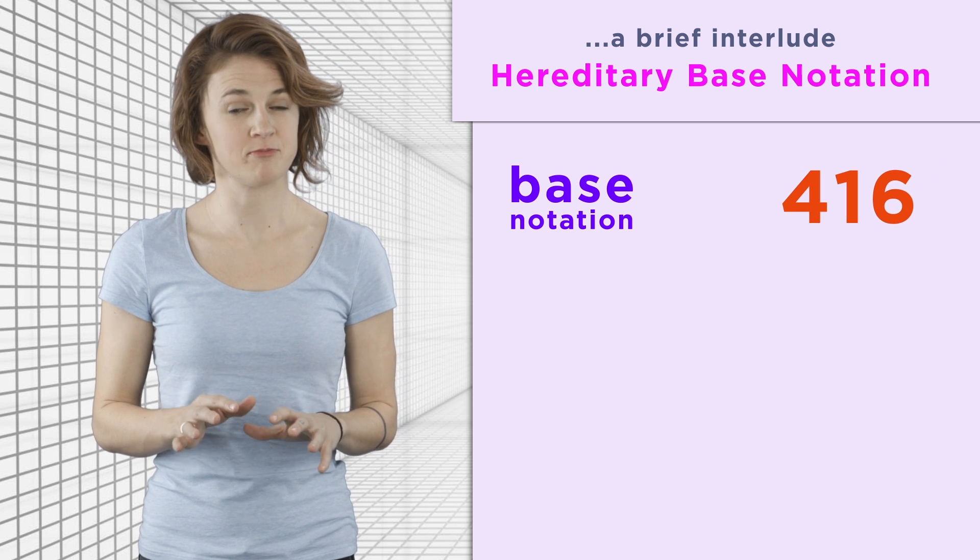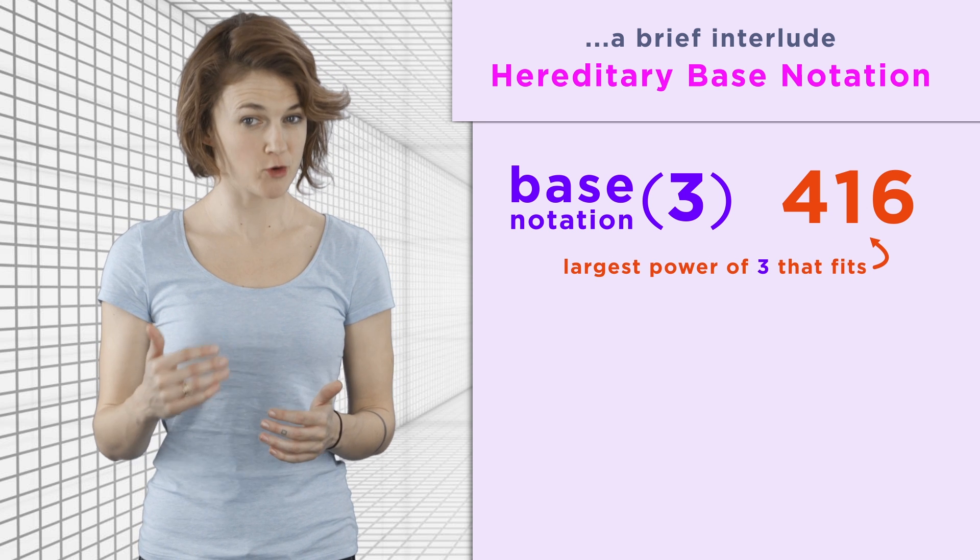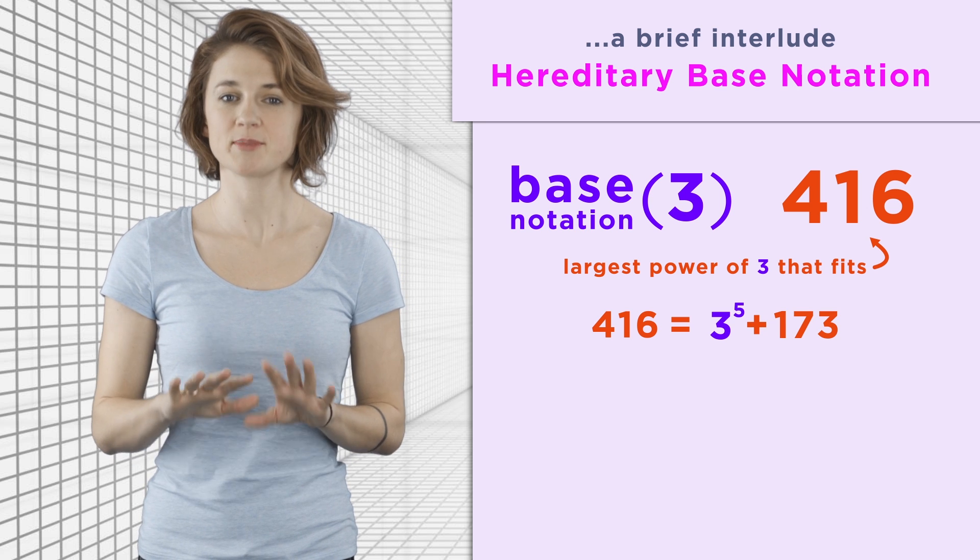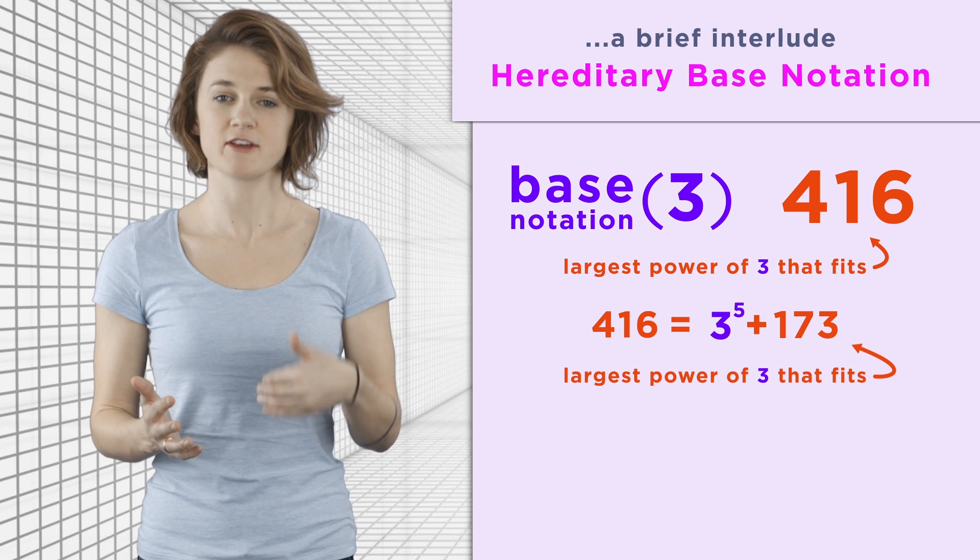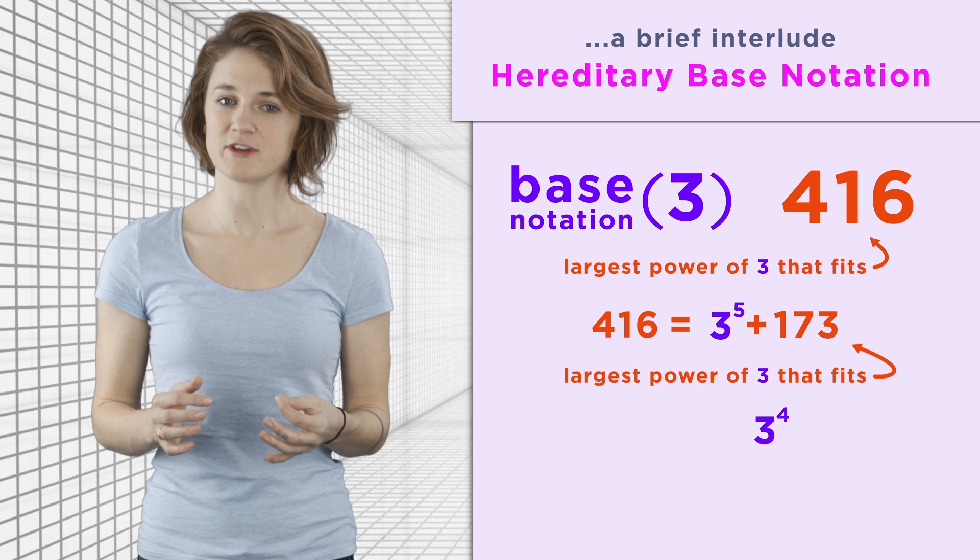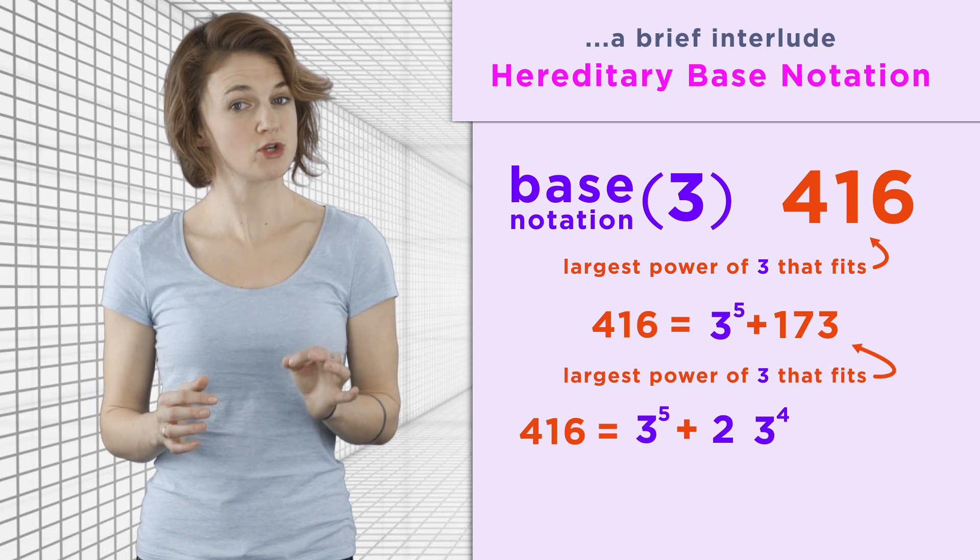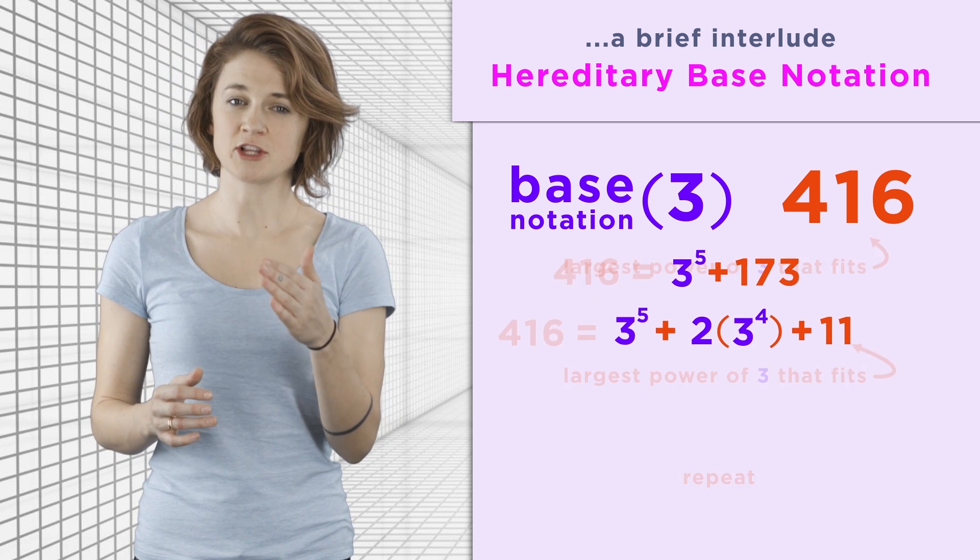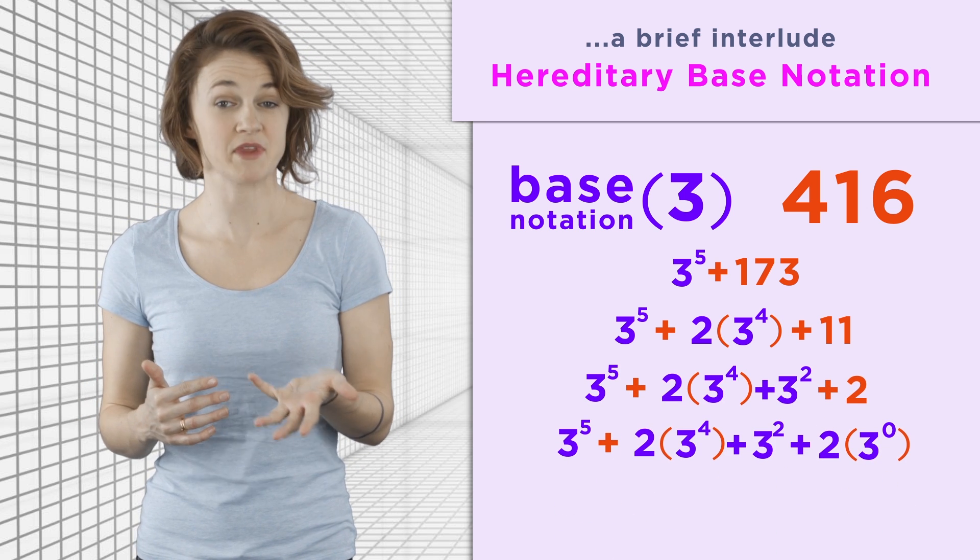To write 416 in base 3 notation, first, pick the largest power of 3 that will fit in 416. So 416 is 3 to the 5th plus 173. Now, what's the largest power of 3 that fits into 173? 3 to the 4th. But that actually fits in twice. So 416 is 3 to the 5th plus 2 times 3 to the 4th plus 11. Repeat this procedure, fitting the largest power of 3 into the leftover part until you get to 3 to the 0, aka 1.